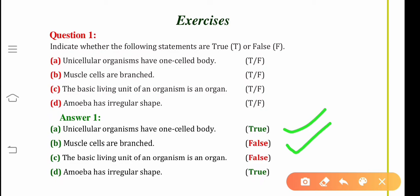Third is the basic living unit of an organ is an organ. We have already discussed that the basic unit is cell. So this is incorrect or false. Amoeba has irregular shape. It is true.